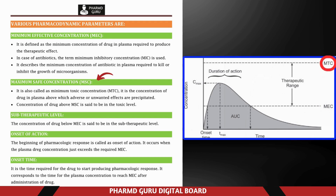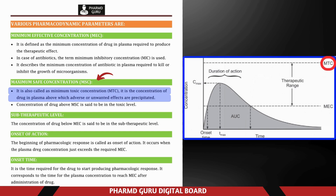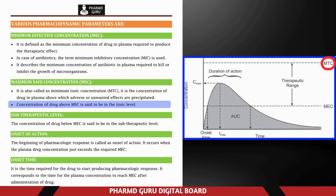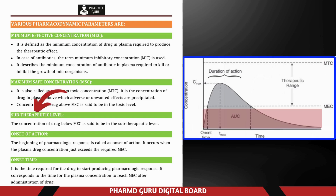Maximum safe concentration (MSC), also called minimum toxic concentration (MTC), is the concentration of drug in plasma above which adverse or unwanted effects are precipitated. Beyond this level, the drug may cause toxicity or unwanted side effects — for example, warfarin concentrations above MSC could cause dangerous bleeding. The concentration of drug above MSC is said to be in the toxic level. The concentration of drug below MEC is said to be in the subtherapeutic level, at which the drug will not provide any benefit.